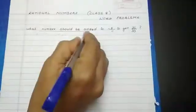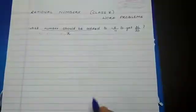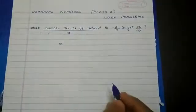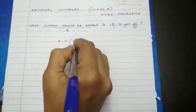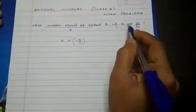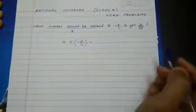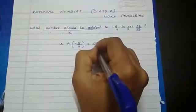What number should be added? Let us assume x has to be added to minus 5 by 11 to get, means so that the result is 26 by 33.